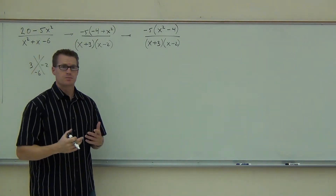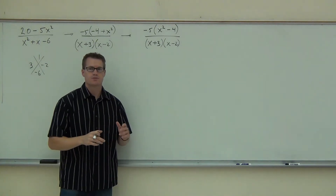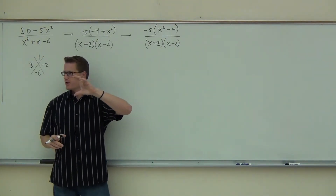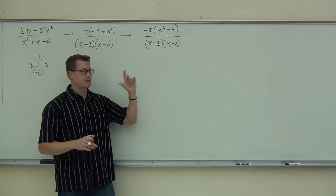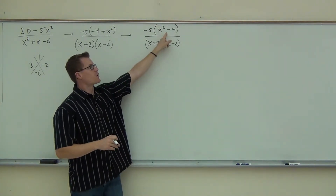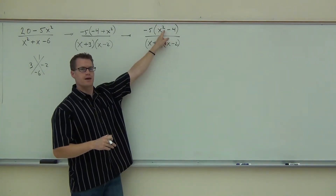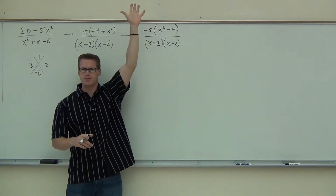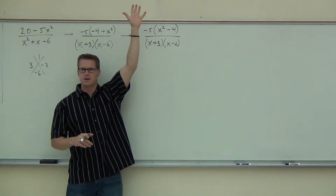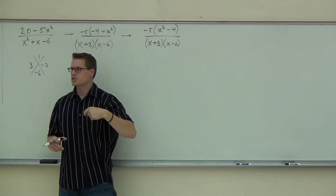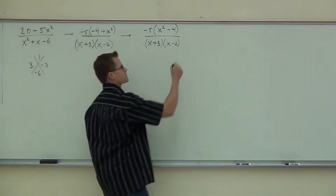Now, we did say factor completely. What we've done so far: we've factored out the negative 5 out of the numerator. We've factored the denominator completely — you can't do anything more with that. But there is something more I can do with the x squared minus 4. Do you remember how to factor that? That's the difference of squares.